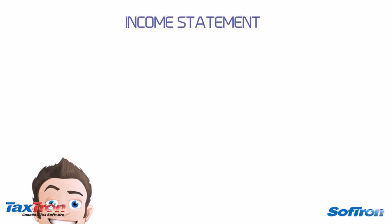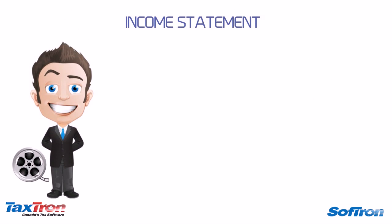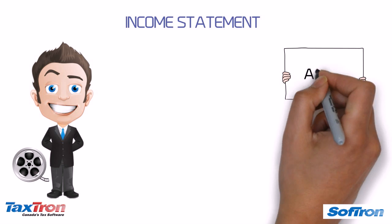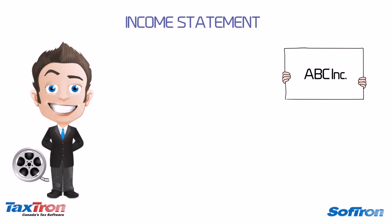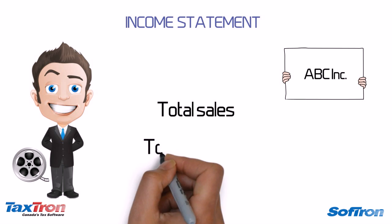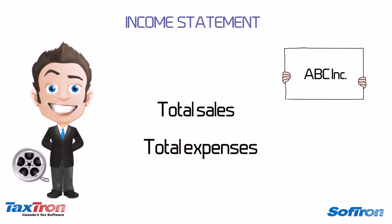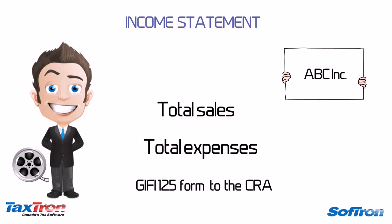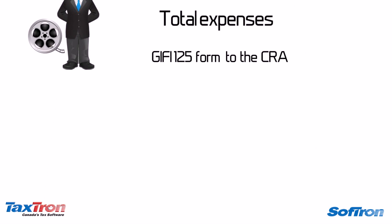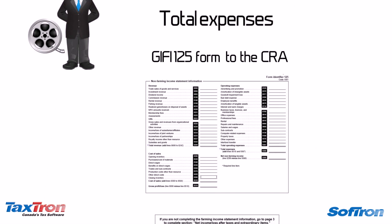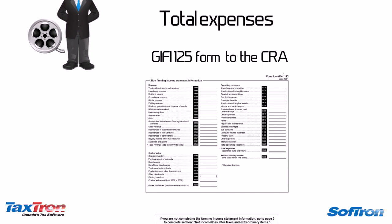The income statement is like a movie of all the financial transactions of ABC Incorporated. It records the total sales that were made during the financial year and the total expenses that were made during the year as well. The income statement is reported on a GIFI 125 form to the CRA.